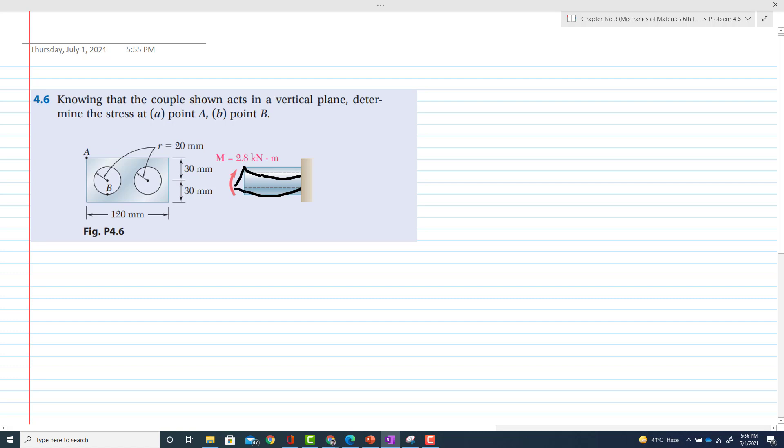You have to find the stresses at point A and point B. Given data is that you have moment value that is 2.8 kilonewton·meter. You have to find stress at point A, which is part A, and you have to find stress at point B.